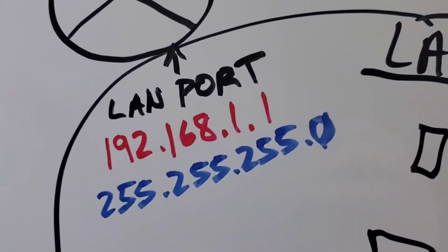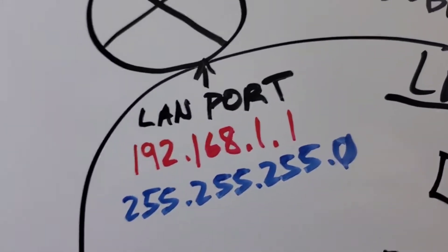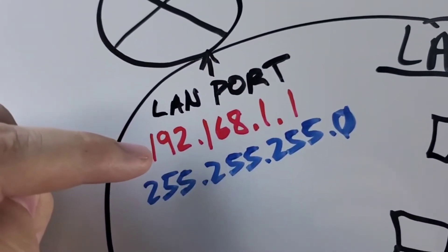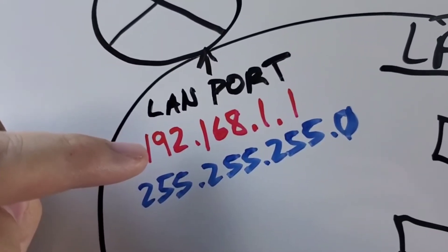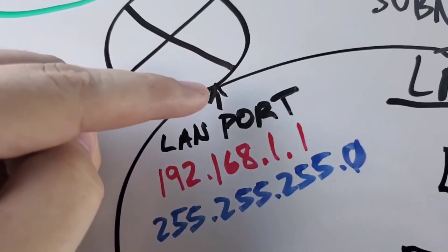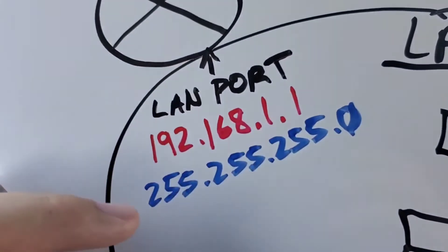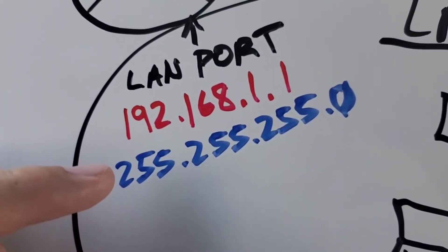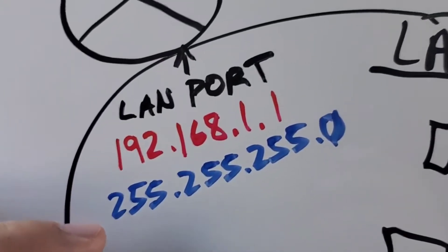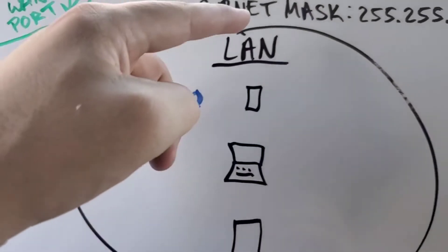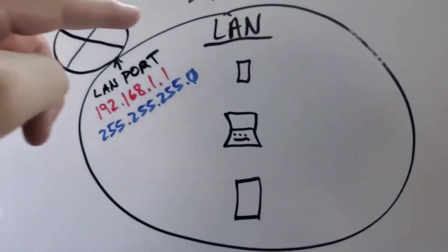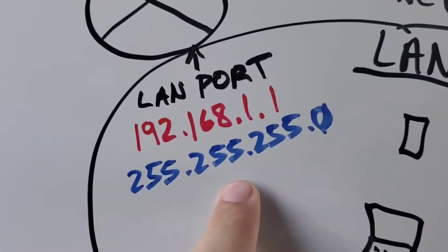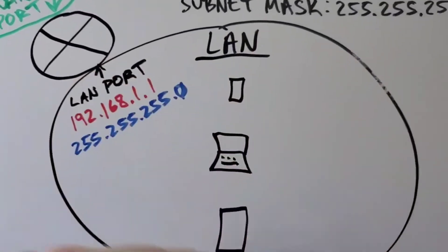This router is pretty much creating this network by having its LAN interface assigned 192.168.1.1. That's the IP address of your LAN, and it says the size of this network is 255.255.255.0. So that IP and subnet mask define everything that's in this network.